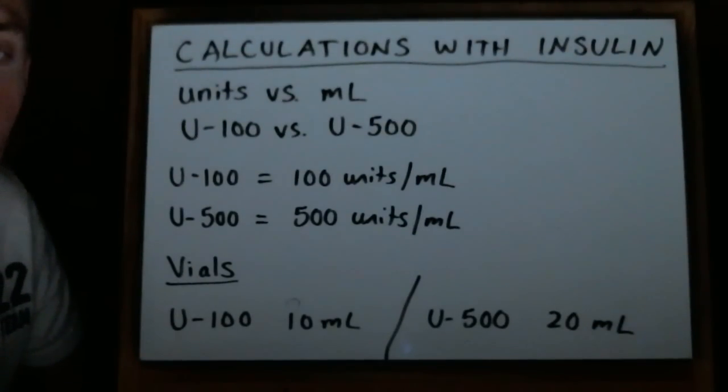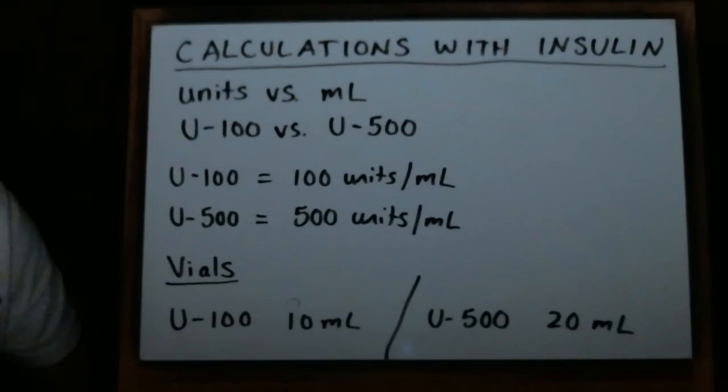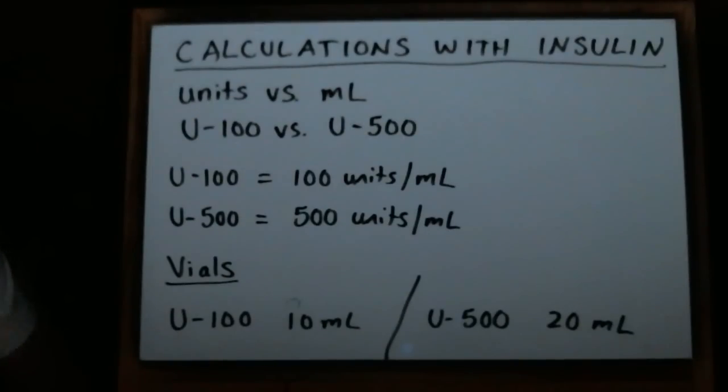This video deals with calculations in the community setting and is actually done by request. It deals with calculations involving insulin. Insulin is a big deal and there's a lot of things involved with different types of insulin - rapid acting, short acting, intermediate, long acting - whether they come in vials or pens, and mixing insulins with NPH or regular insulins. That's all outside the scope of this video since this is concerned mainly with calculations, but there are a few topics I want to go over that are directly involved with calculations.